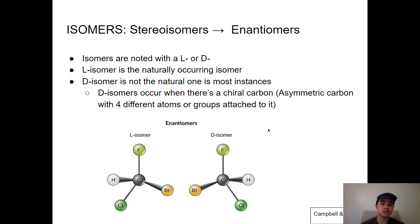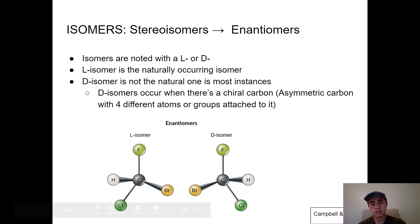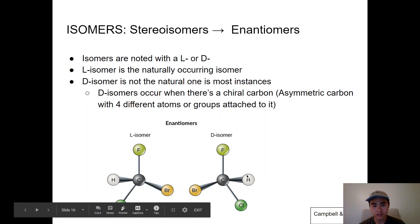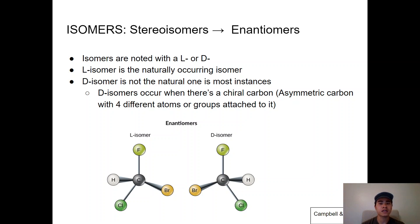Enantiomers occur because of an asymmetric carbon, also called a chiral carbon. A chiral carbon has four different groups attached to it — four different elements or groups bonded to that one carbon, making it asymmetrical. Stereoisomers generally occur when that type of asymmetric chiral carbon is present in the molecule.